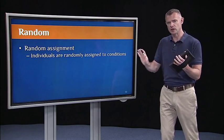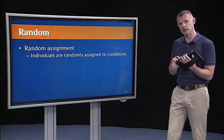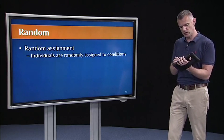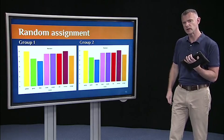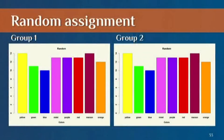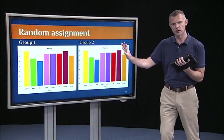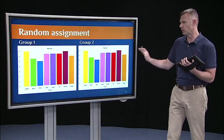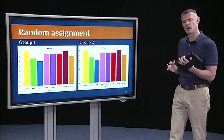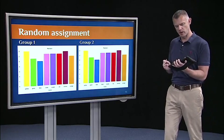There's random assignment to conditions. And if we successfully assign subjects to conditions, then we should get something that looks like this with respect to this color wheel example. Group one and group two, not only should they have this sort of uniform distribution of colors, but they should also look similar. Group one should have a similar distribution to group two. So this is an example of random assignment to two groups or two conditions in an experiment.